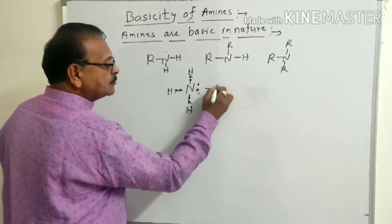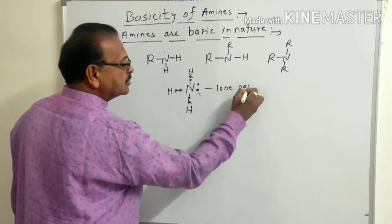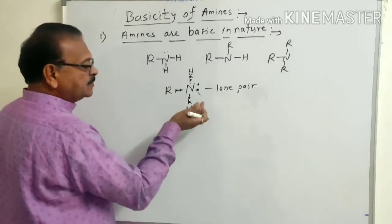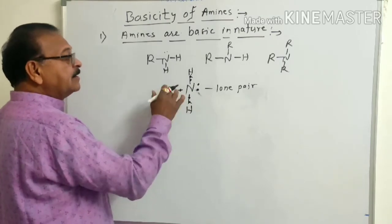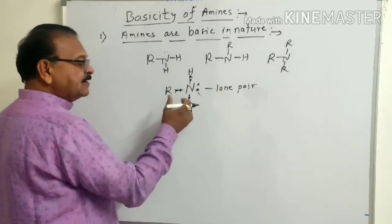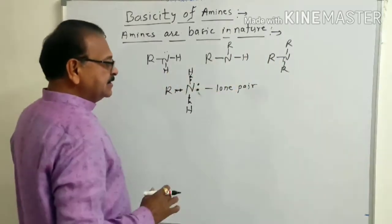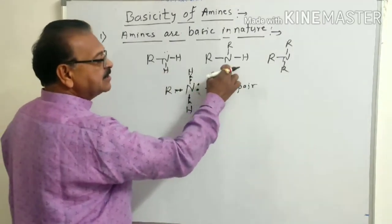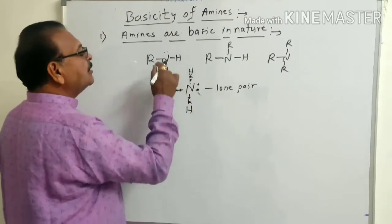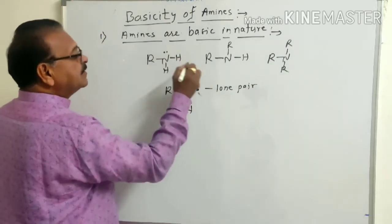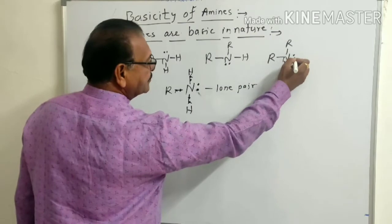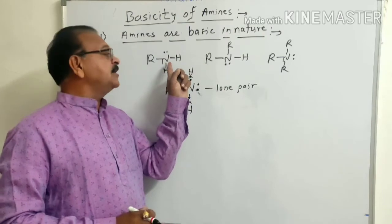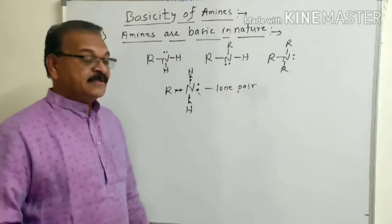Such an unshared pair is called a lone pair of electrons. When hydrogen is replaced by an alkyl group, it becomes amines. We know that amines are alkyl derivatives of ammonia and are aliphatic in nature. So in the formula of primary, secondary, and tertiary amines, nitrogen contains one lone pair of electrons.